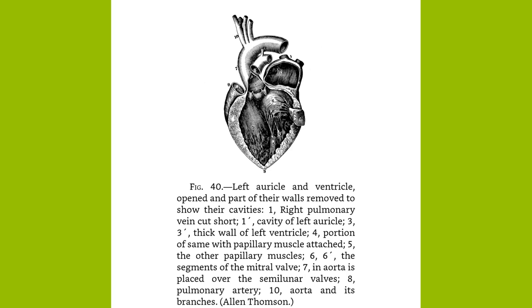The common iliacs divide at the upper edge of the sacrum into the external and internal iliacs, of which the latter with its branches supplies the walls and viscera of the pelvis and the inner part of the thigh. The external iliac and its branches go to the thigh, leg, and foot.